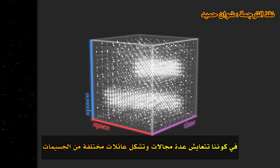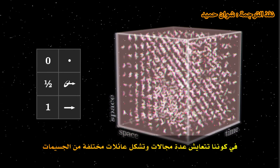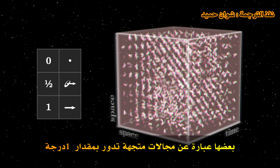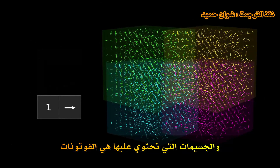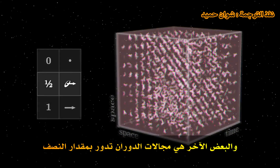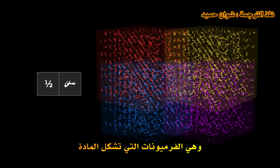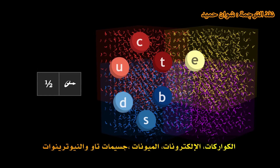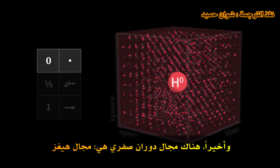In our universe, several fields coexist and constitute different families of particles. Some are vector fields, spin 1, and the particles they contain are photons, Z and W bosons, and gluons. Others are fields of spinors, spin 1/2 — they are the fermions that make up matter: quarks, electrons, muons, tau particles, and neutrinos. Finally, there is a field of spin zero — the Higgs field.